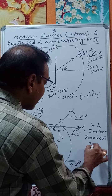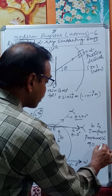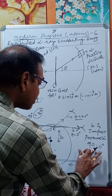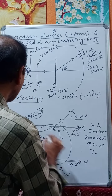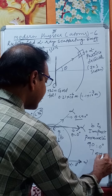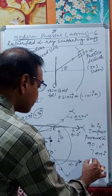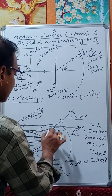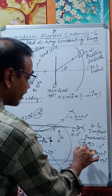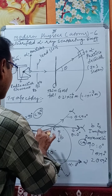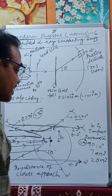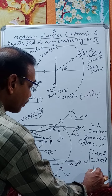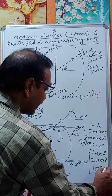If we take 100 alpha particles, about 90 go undeviated at θ = 0°, about 7 are scattered at θ > 90°, about 2 are scattered at θ < 90°, and only 1 alpha particle recoils back at θ = 180°.